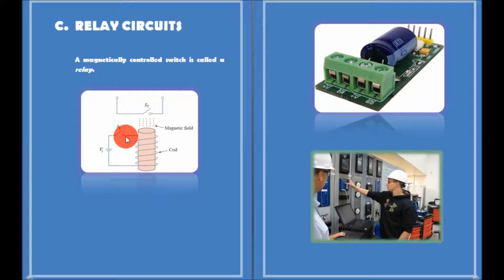When the switch S1 is closed, the coil current is energized. The coil current gradually increases and produces a magnetic field. Eventually, the magnetic field is sufficiently strong to pull the movable contact in the other circuit and close the switch S2.